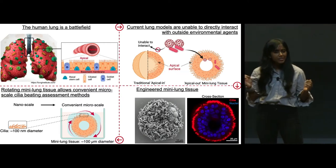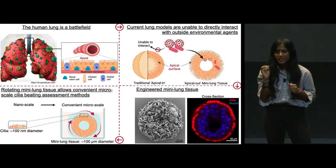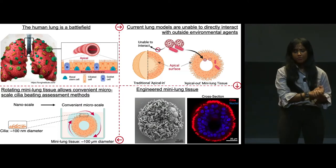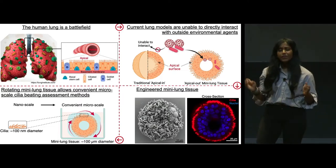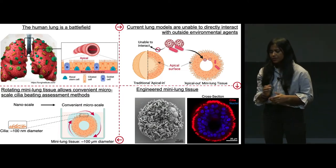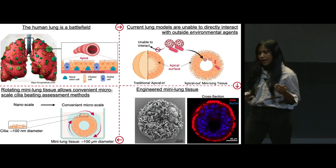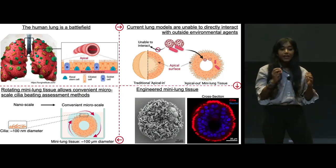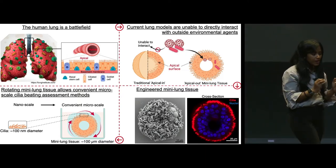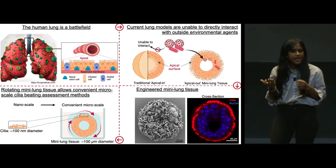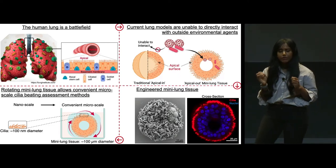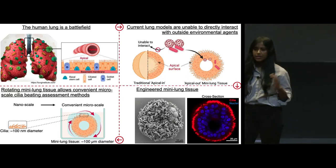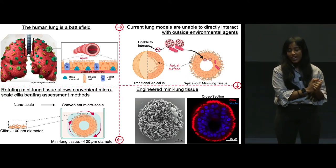So having a good model to study these interactions is extremely important. There are current airway or lung models; however, they're highly undesirable. The reason is they have a disoriented apical surface where it's hidden inside the tissue. Unlike in our human lung, they're highly inaccessible to the external environment factors that we want to test when modeling infection.